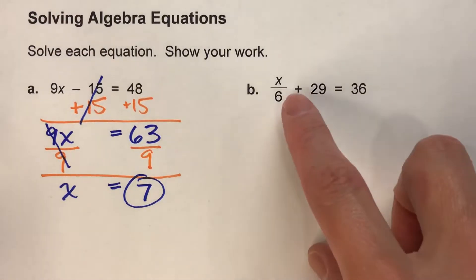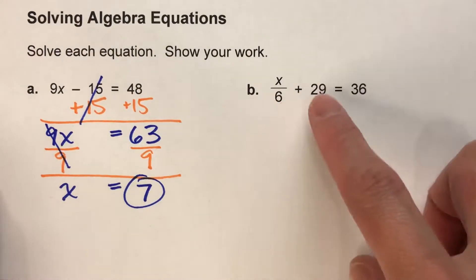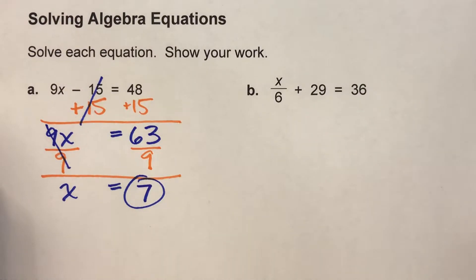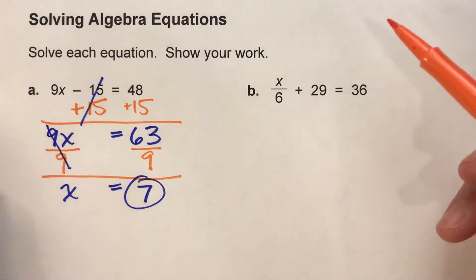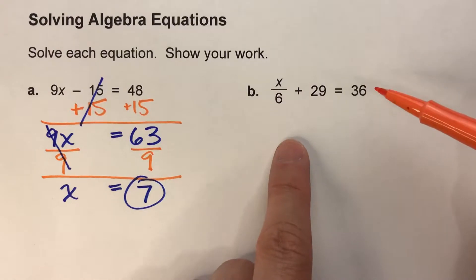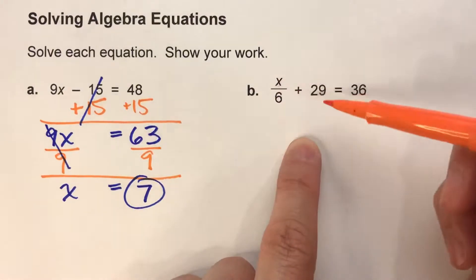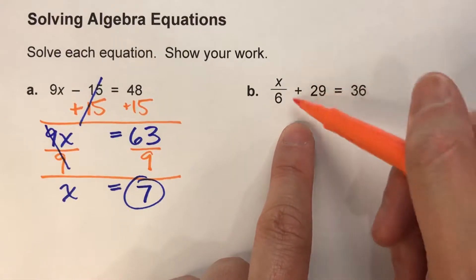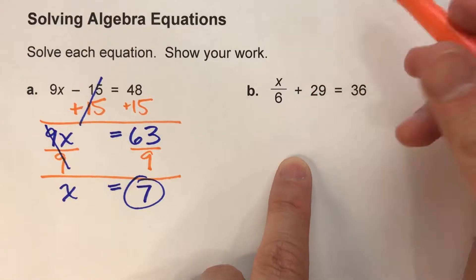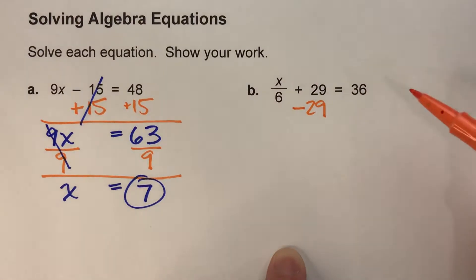Let's do another one. This time we've got x divided by 6 plus 29 equals 36. We're going to undo it in the opposite order that was done to x. The last thing they did to x was add 29, so we're going to subtract 29 to undo it.